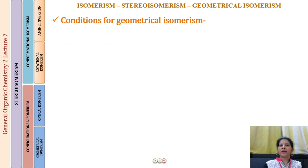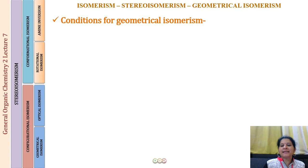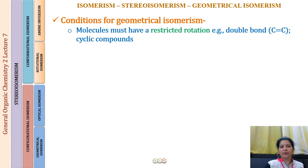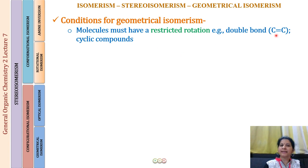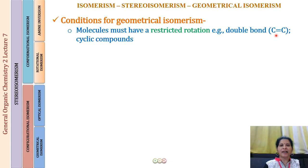Before beginning today's lecture, let's revise the conditions for geometrical isomerism. The first condition is that molecules must have a restricted rotation, seen in the case of a double bond — carbon-carbon, carbon-nitrogen, and nitrogen-nitrogen double bonds all showed geometrical isomerism in aldoximes, ketoximes, and azobenzenes.